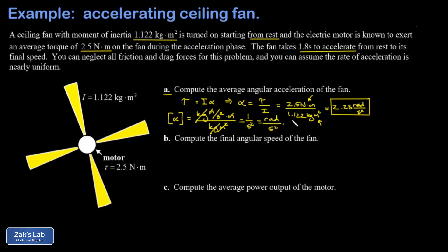In part B, I want the final angular speed of the fan. I have its acceleration and I have how long it's been accelerating for, so this is just an angular kinematics question. I use the second kinematics formula: omega equals omega naught plus alpha t.